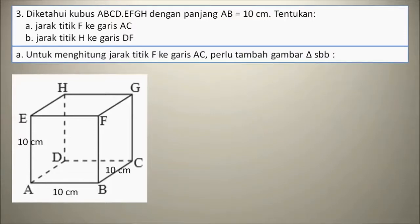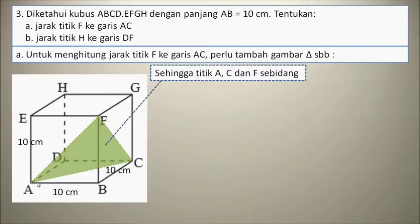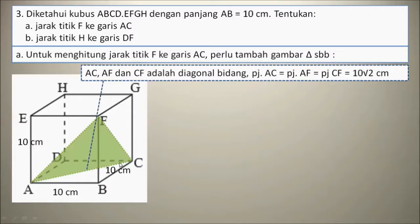A, untuk menghitung jarak titik F ke garis AC, perlu kita tambah gambar segitiga sebagai berikut. Jadi, kita perlukan segitiga ACF, sehingga titik A, titik C, dan titik F terletak sebidang. AC, AF, dan CF adalah diagonal bidang pada kubus.